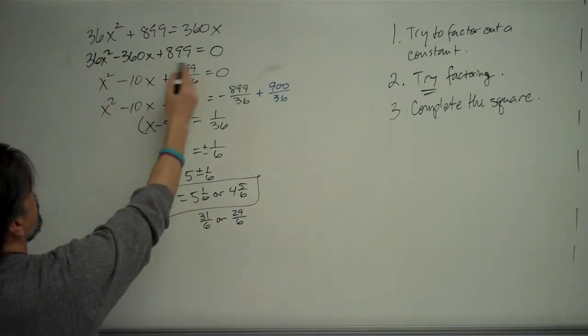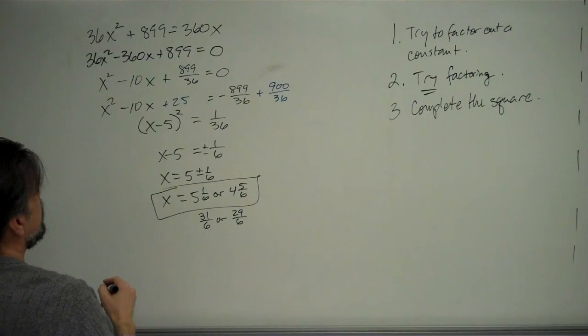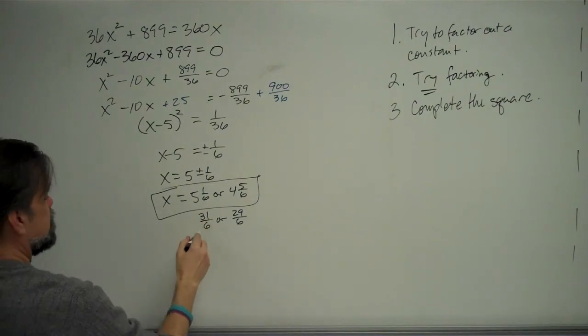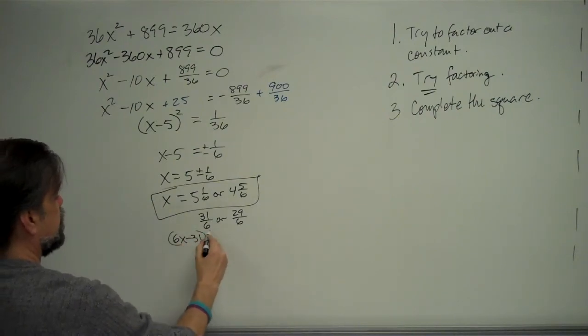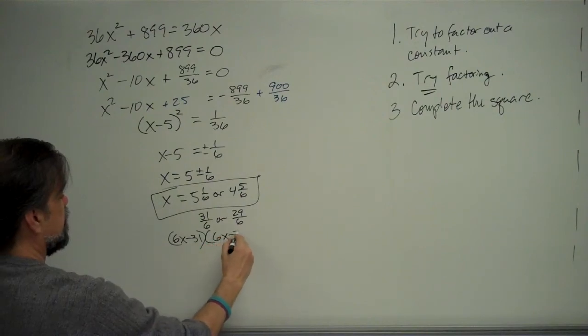So I guess we could have factored this thing at the very beginning. And if we had factored it to get a solution of 31 over 6, that tells me one of my factors would have been 6x minus 31, and the other factor would have been 6x minus 29.